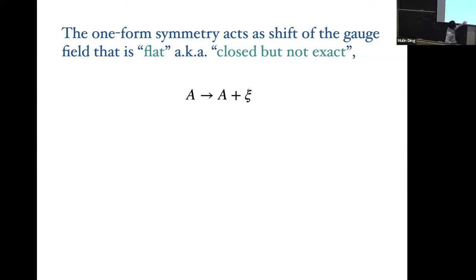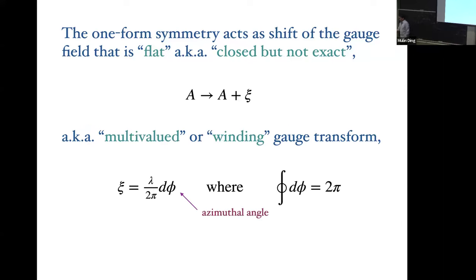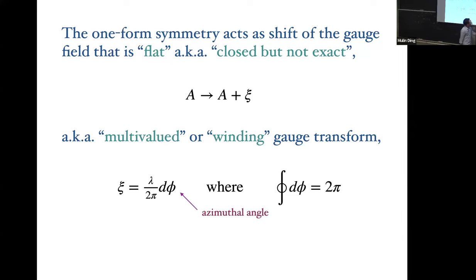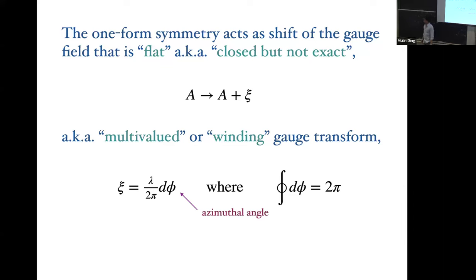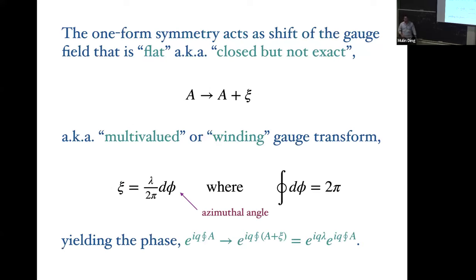Concretely, imagine shifting A by d-phi where phi is an angular coordinate. Naively you'd say this is a gauge transformation of d-something. But this is not a proper gauge transformation because the integral of the gradient of phi around a circle is not zero — it gives 2pi because there's winding. In other words, d-phi is a solenoidal gauge field configuration. If you were sitting at one local point, you wouldn't know about that winding, but operators which encircle the origin will know. Explicitly, if you take the Wilson loop and shift A by d-phi, you just get that phase.